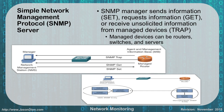Simple Network Management Protocol allows us to send information using a set. We can get information using a request or a get, or we can receive unsolicited information from managed devices called a trap. Managed devices can be routers, switches, and servers. In this example, a manager and a managed router send information back and forth using those get, set, and traps.